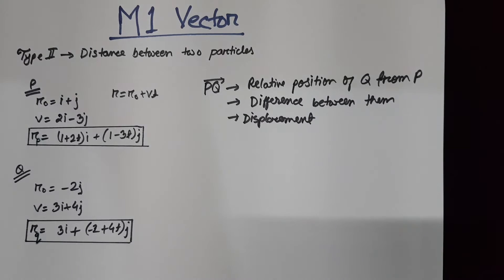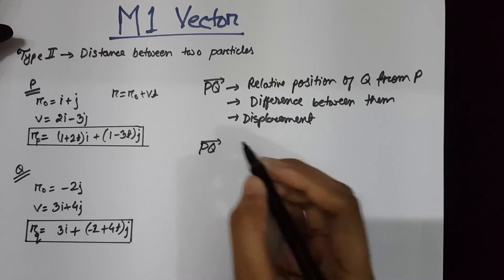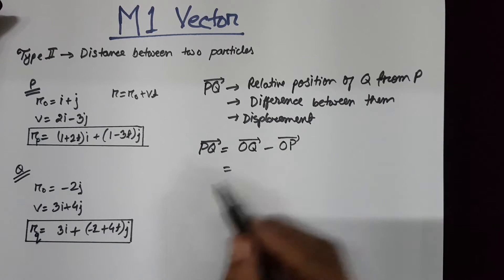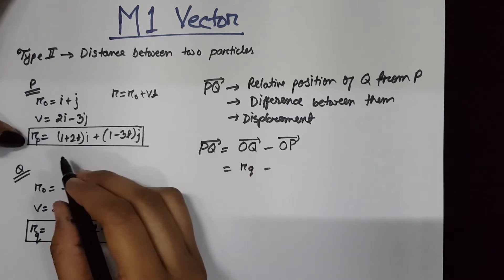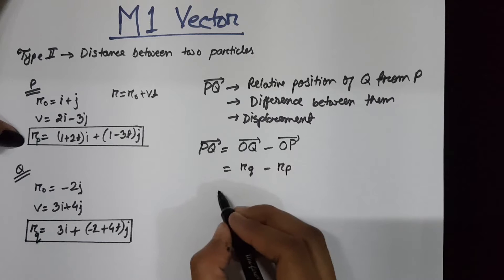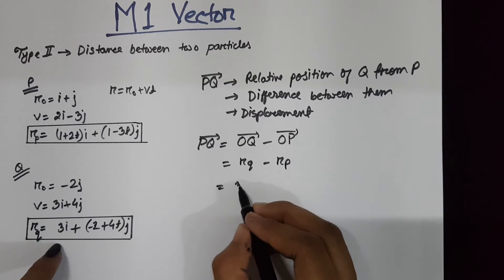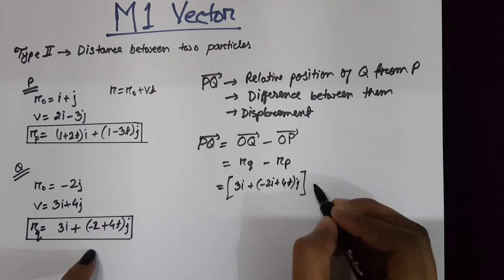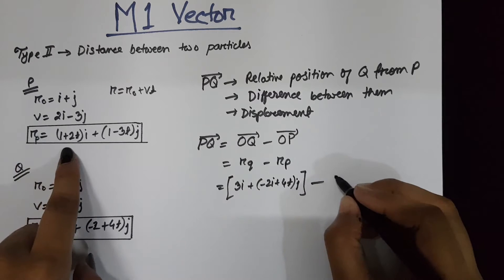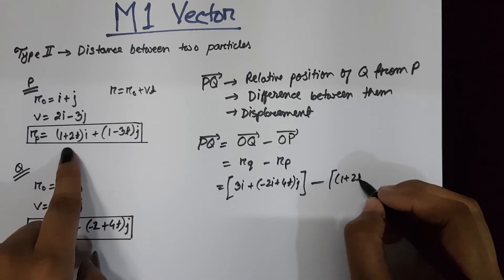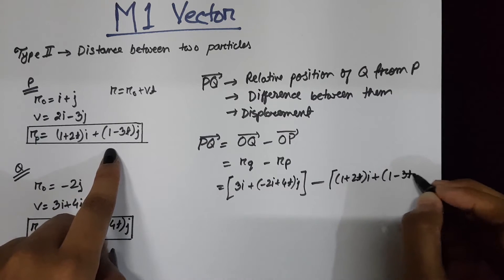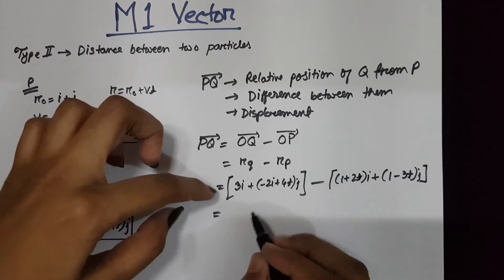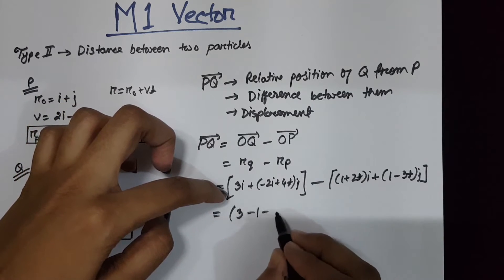Note that this gives displacement, not distance. PQ equals OQ minus OP — that is, the final position of Q minus the final position of P. So, 3i minus the value of r_P. Only the difference of the i-coordinate will appear: (3 - 1 - (1 - 2t))i.